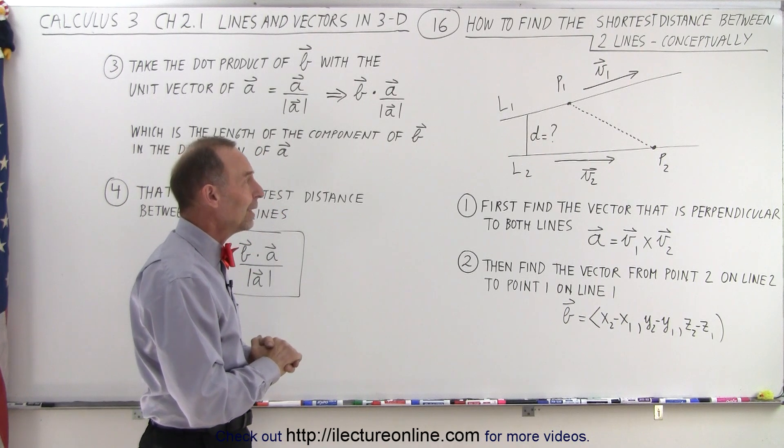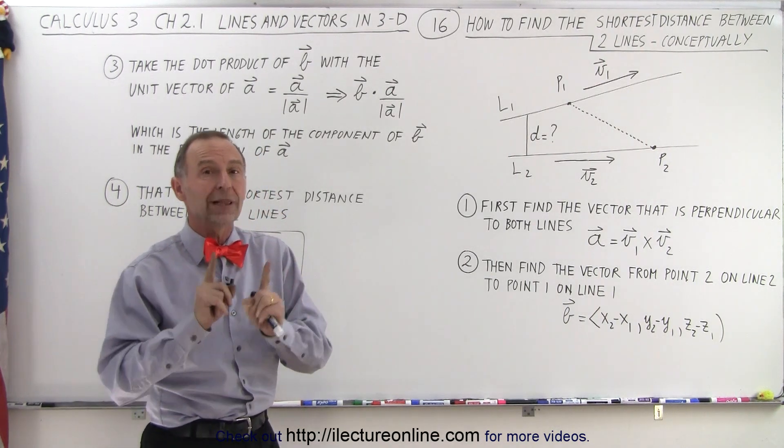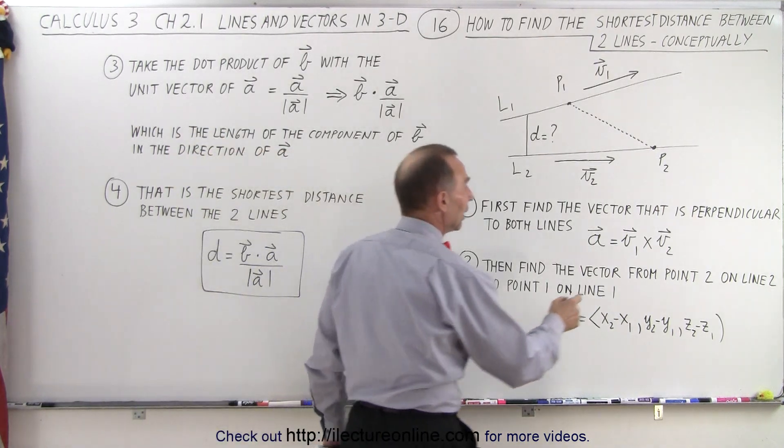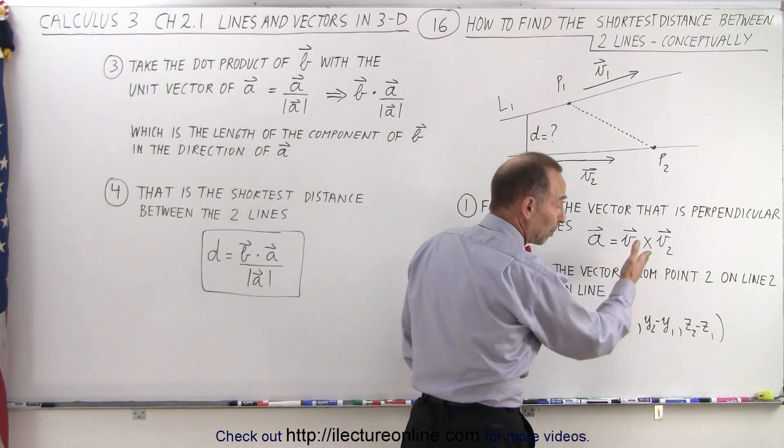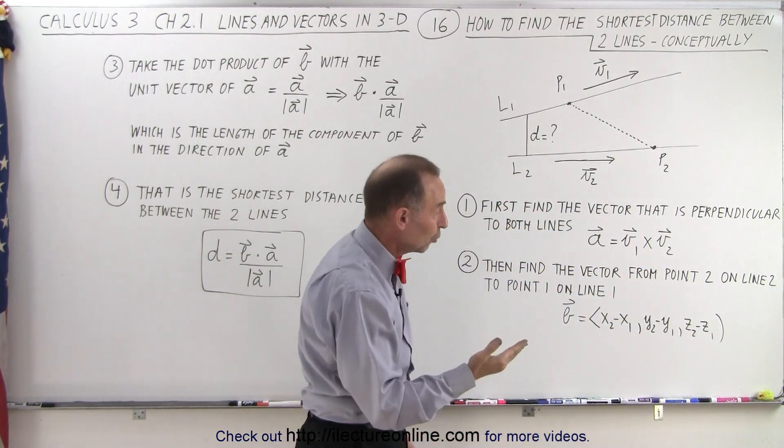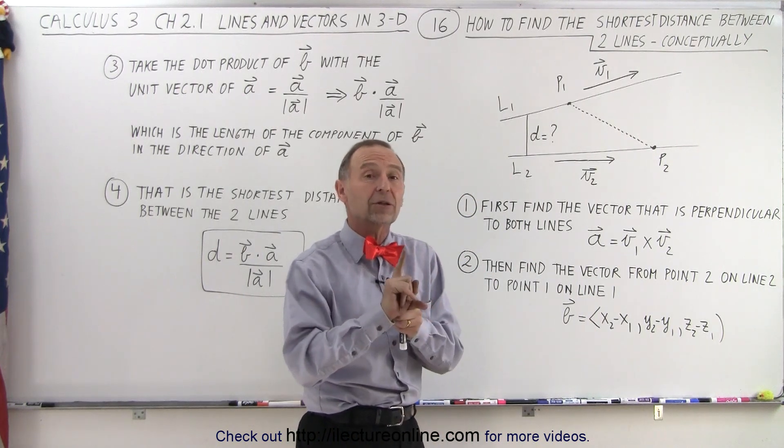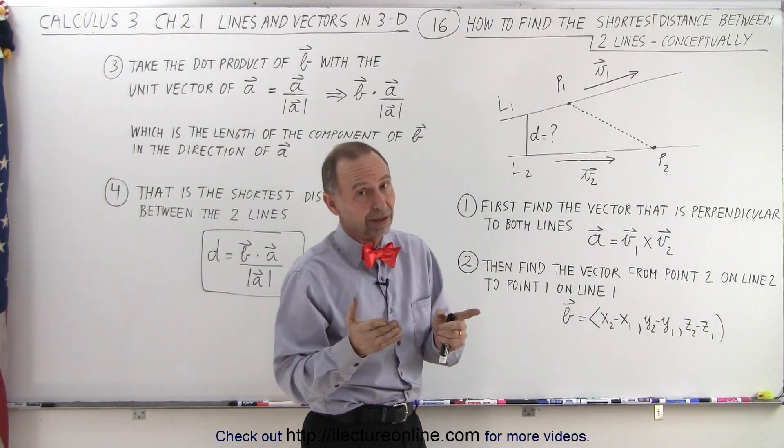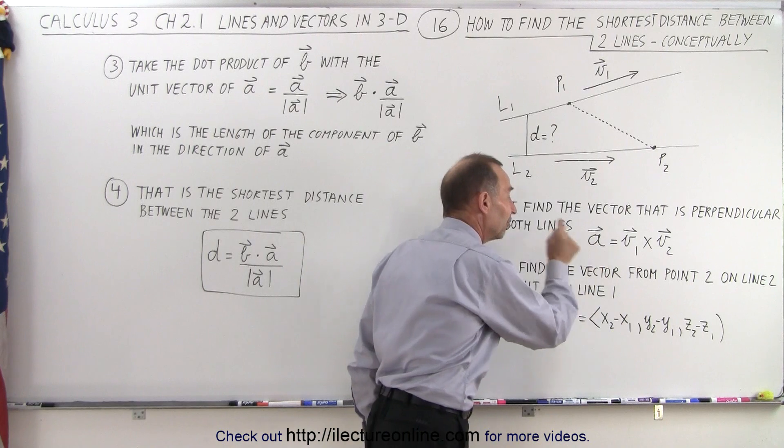So the first thing we're going to do is find the vector that's perpendicular to both lines at the same time. In order to do that, we're going to simply take the cross product of vector one and vector two. Since vector one is parallel to line one, and vector two is parallel to line two, if we take the cross product, we get a third vector, which is perpendicular to both V1 and V2, which means it's perpendicular to both line one and line two, and let's call that vector, vector A.